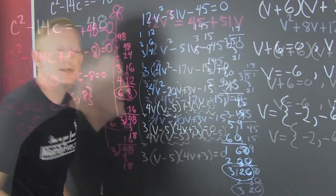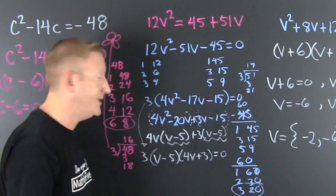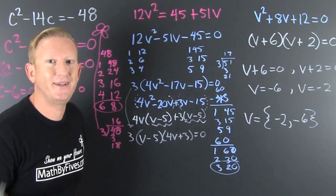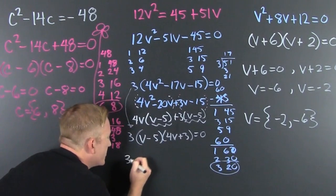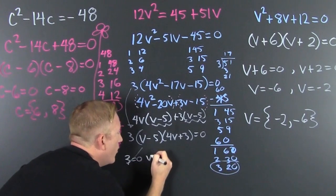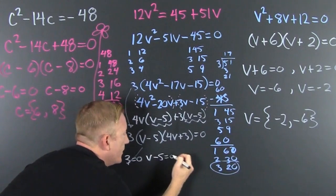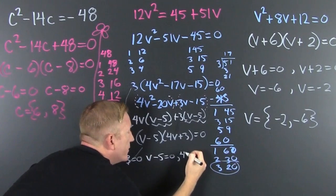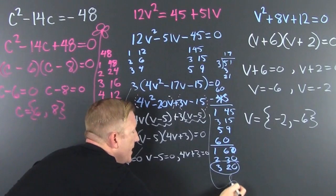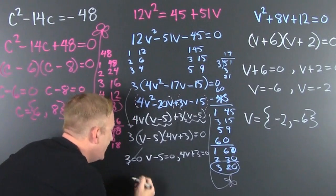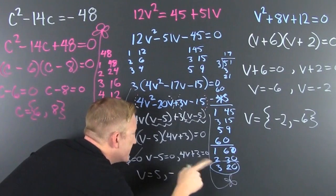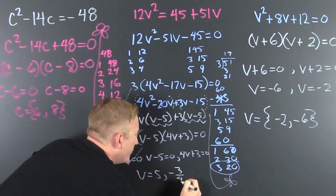So now we use that zero factor property. Either 3 is equal to 0, that's not true, let's just x that out, or v minus 5 is equal to 0, or 4v plus 3 is equal to 0. Then we see here that our v is gonna be 5 or a minus 3 fourths.